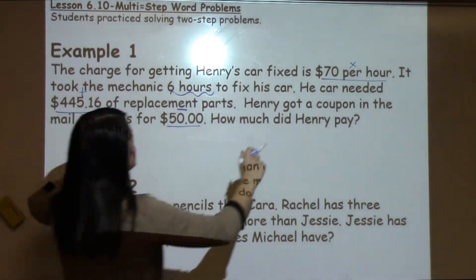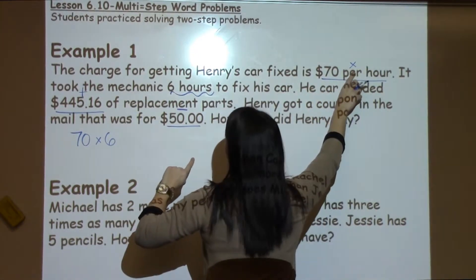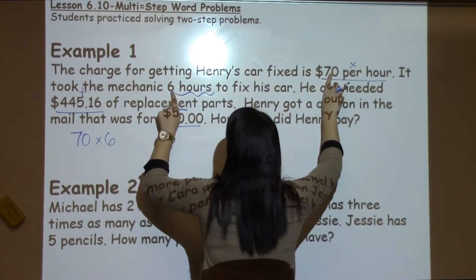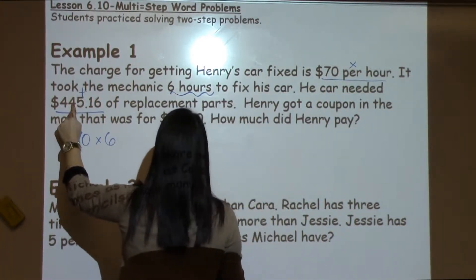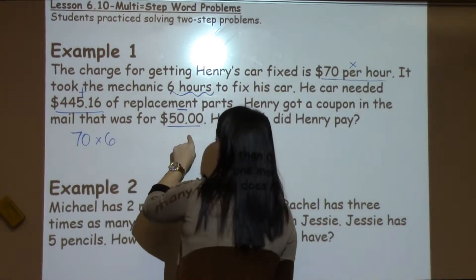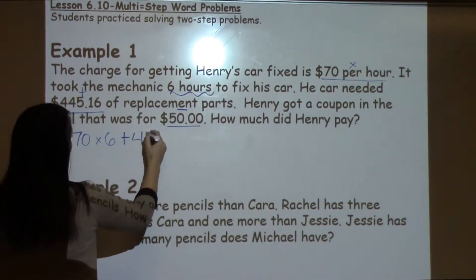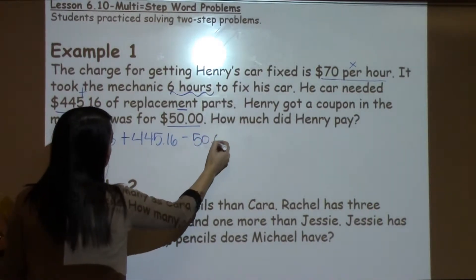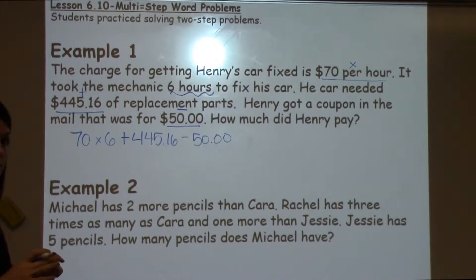So I actually have three different operations I'm going to be doing in this problem. I need to multiply the amount times the number of hours, I need to add in how much the parts cost, and I also need to subtract the $50. When I look at this in one long line it becomes really overwhelming, so we really just want students to focus on one section at a time.